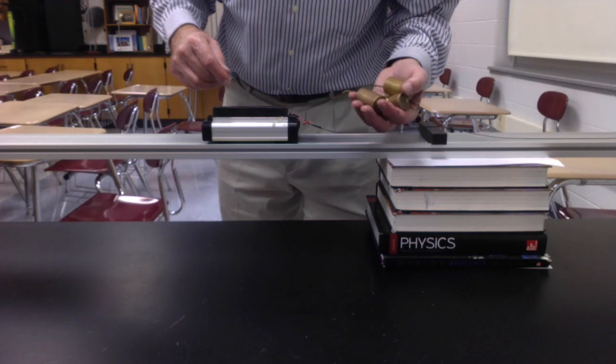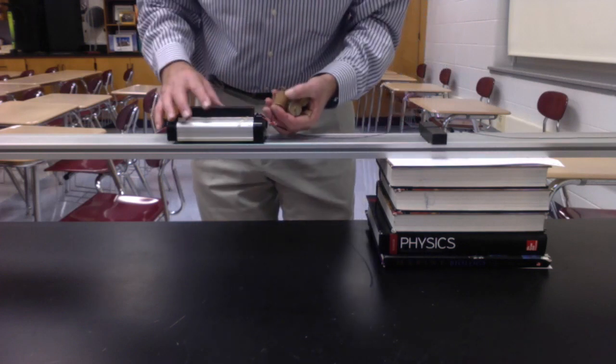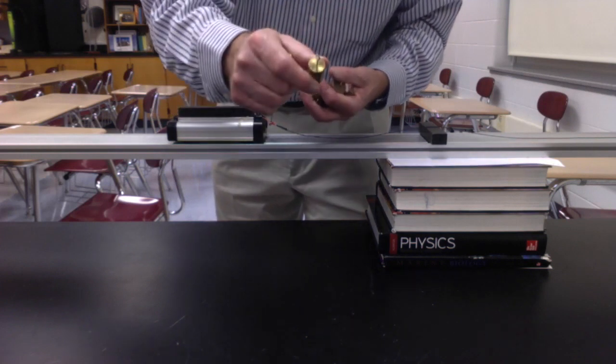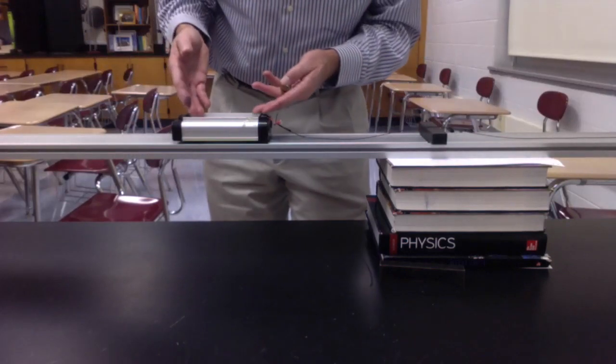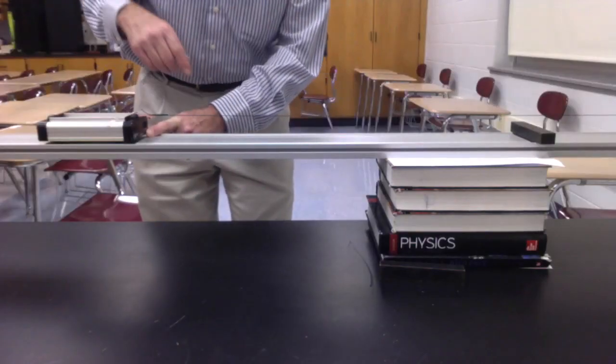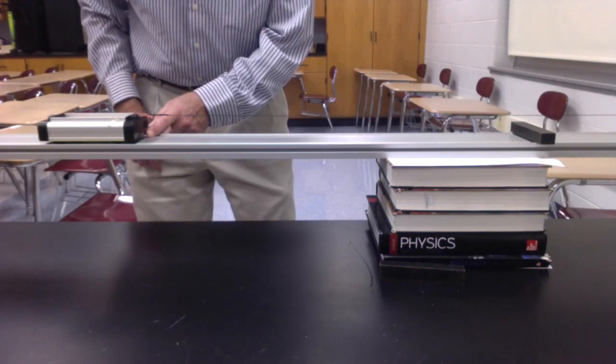We're going to start another experiment now, but it's going to be a little different. We're going to change the mass of the cart, but keep the same mass hanging off the front. We're going to use 50 grams and we'll start with an empty cart. That's only 500 grams. So the mass of the system is now 550 grams. Ready, set, go.